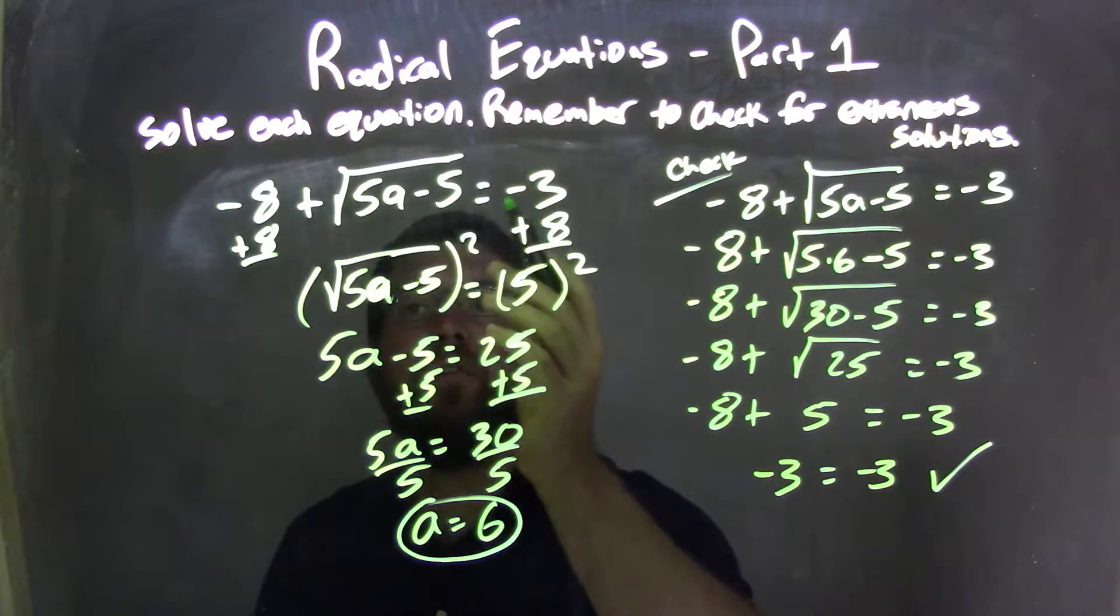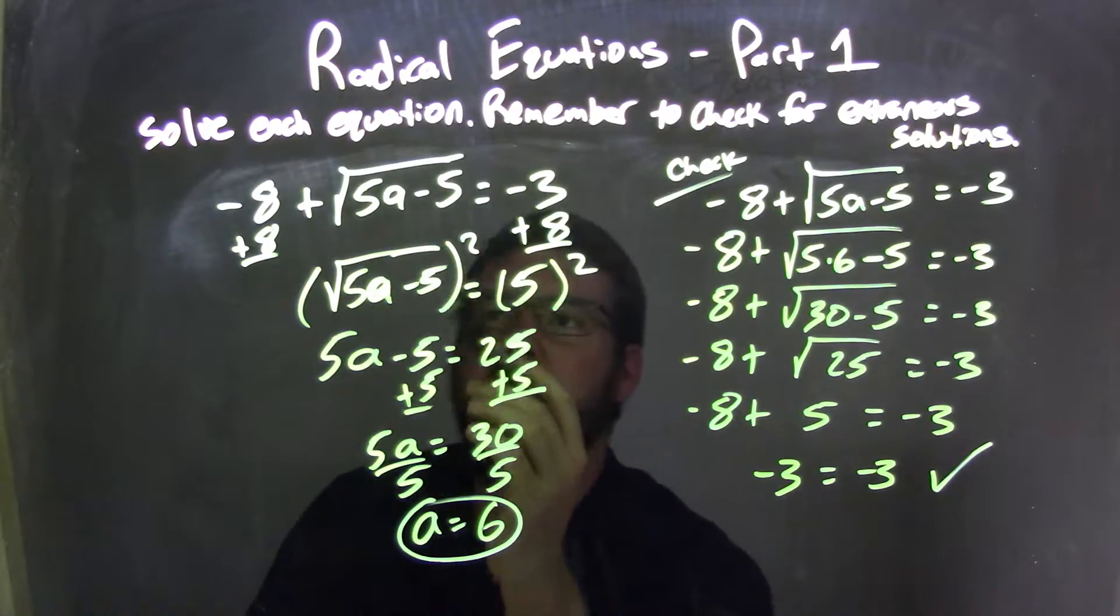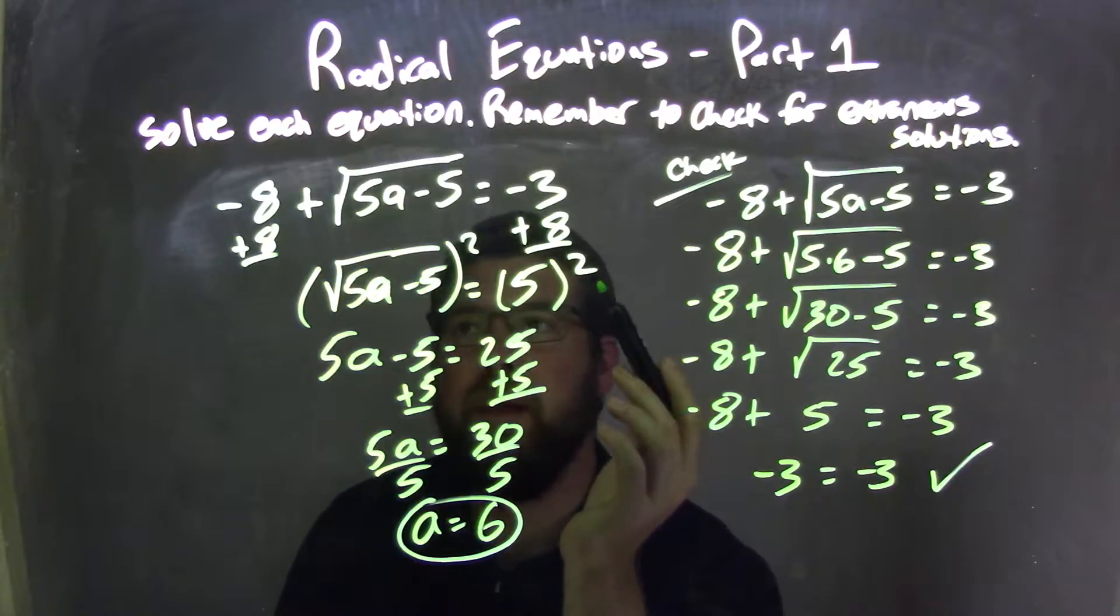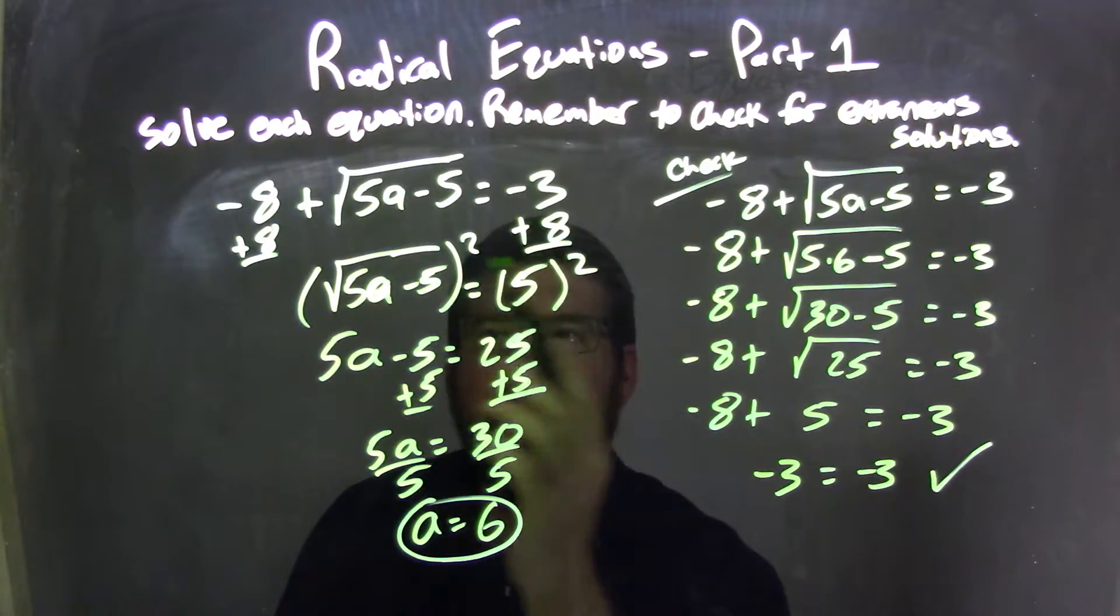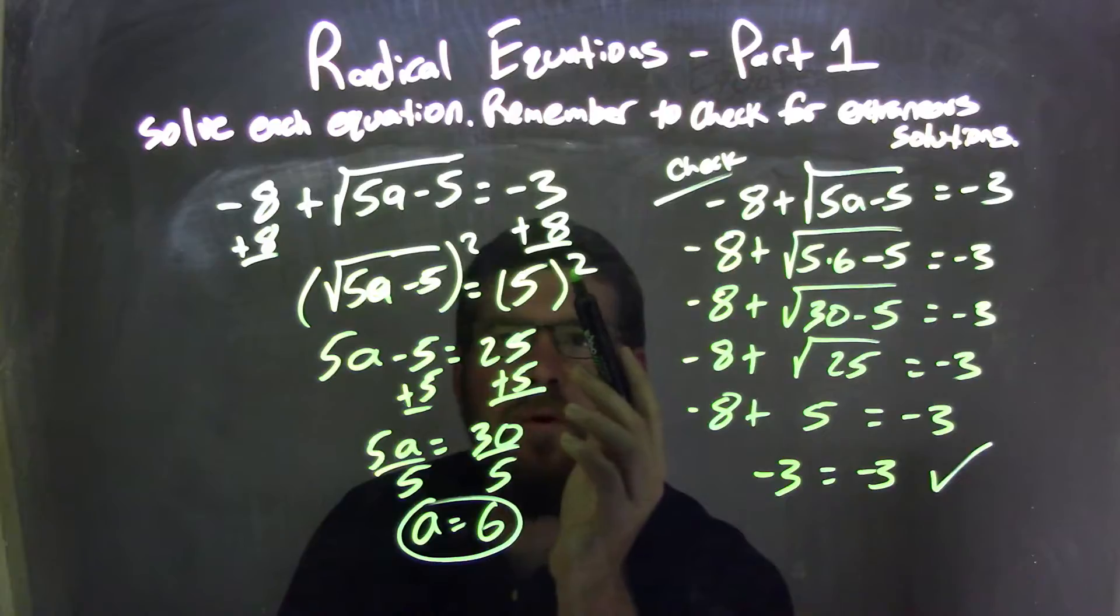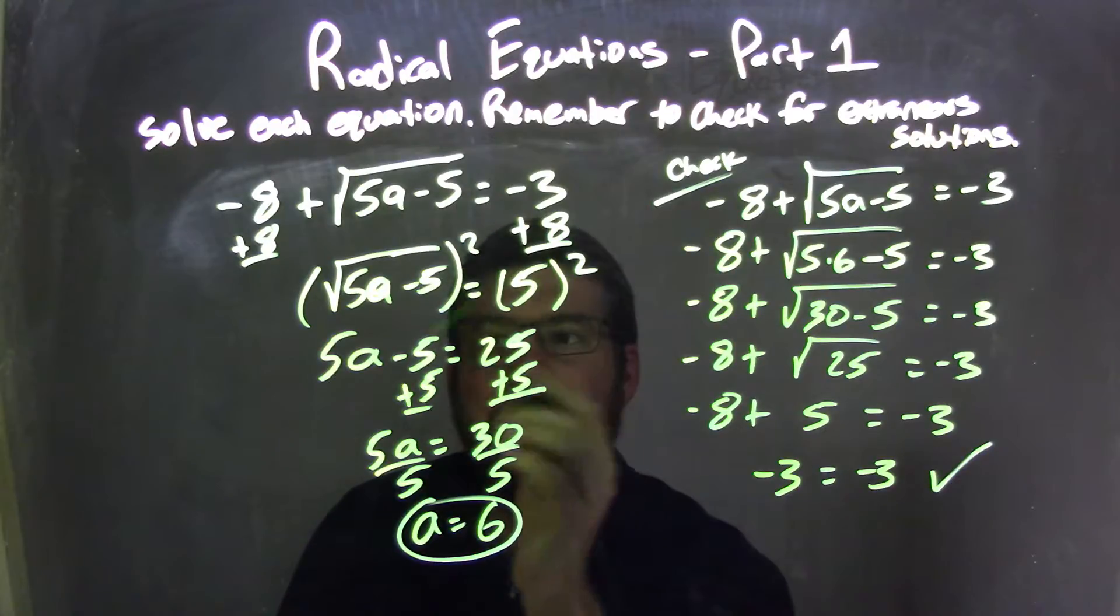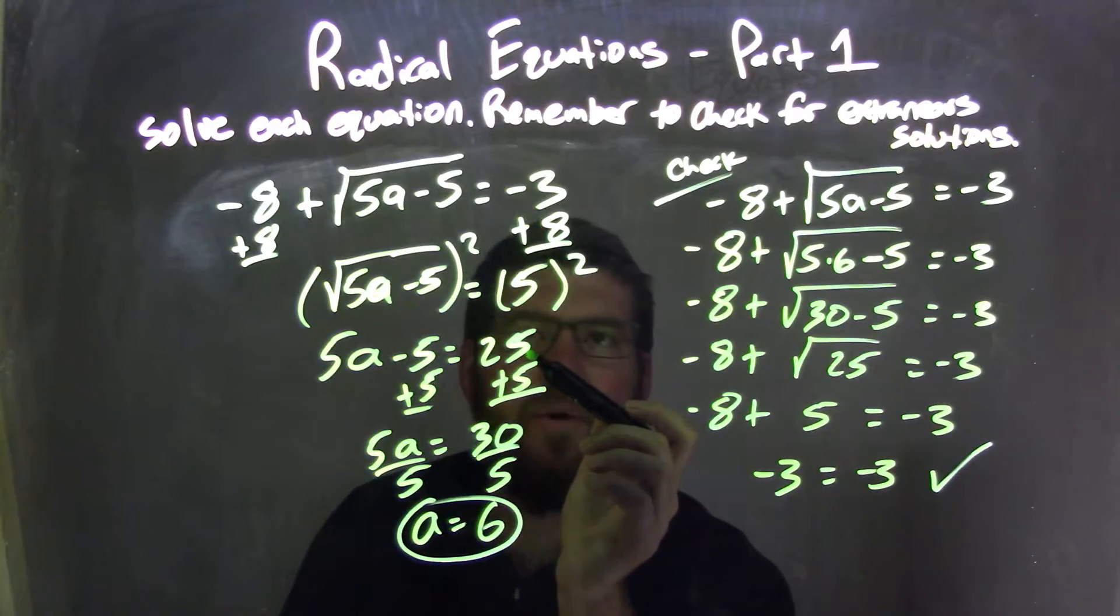Let's recap. We're given our equation: negative 8 plus square root of 5a minus 5 equals negative 3. I then added 8 to both sides to isolate the square root. I then squared both sides to eliminate the square root, leaving me with 5a minus 5 equals 25.